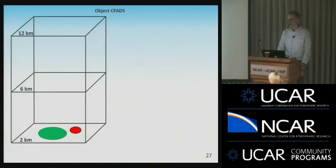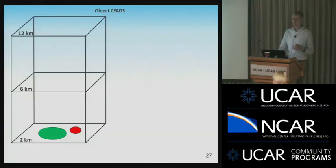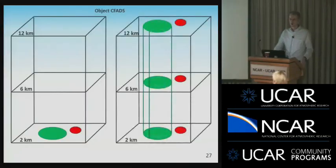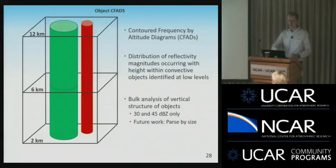The next step is to look at Contoured Frequency by Altitude Diagrams (CFADs). You're looking at the distribution of reflectivity with height — how often certain reflectivity values occur. Normally you do this across the entire domain, but in this case we're only interested in what's causing precipitation near the surface. So we're generating objects at 2 km and then looking up through height within those objects at different levels. We're analyzing all levels in between, and right now it's a bulk analysis of the vertical structure, but eventually we want to parse by size and by time to pick out the diurnal cycle.